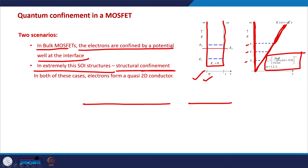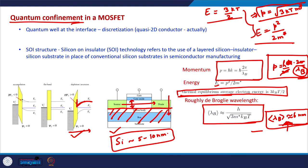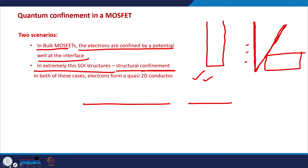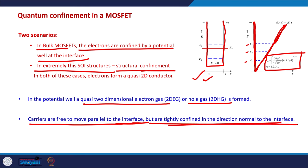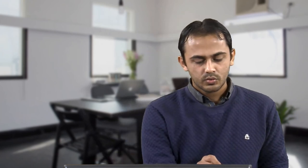In almost all MOSFETs, because the thickness of the inversion layer is only a few nanometers — on the order of the de Broglie wavelength of electrons — we need to consider quantum confinement of charge carriers even in bulk MOSFETs. Quantum confinement leads to creation of quasi-2D electron gas and quasi-2D hole gas. The carriers are free to move parallel to the interface in X and Z directions, but are tightly confined in the normal direction Y. This applies even to traditional long channel MOSFETs.